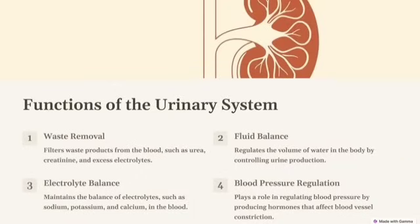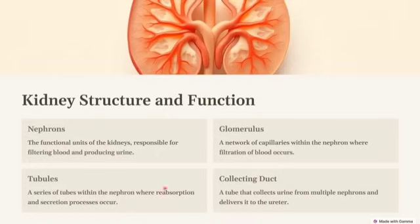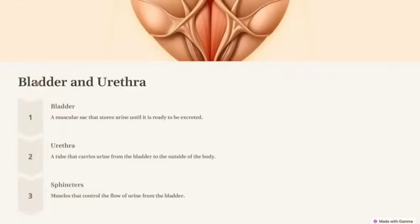Regarding kidney structure and function: nephrons filter the blood and produce urine; glomerular structures — millions of nephrons filter the blood as discussed; tubules — the series of tubes within the nephrons including the PCT, DCT, Loop of Henle, and collecting ducts where reabsorption takes place; and the collecting duct collects urine from multiple nephrons and delivers it to the ureter, which then goes to the bladder.